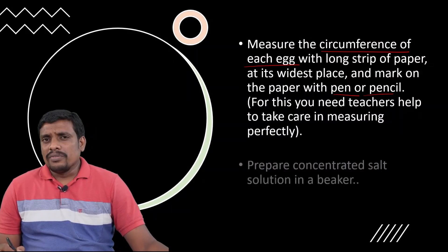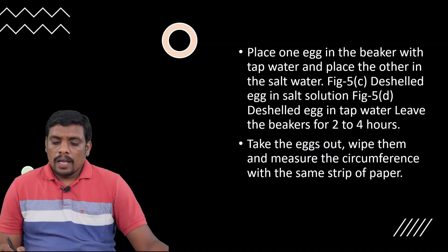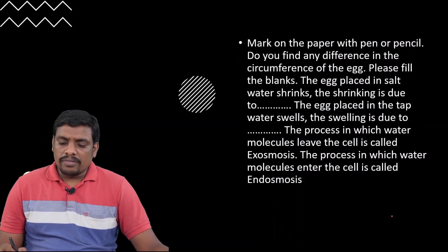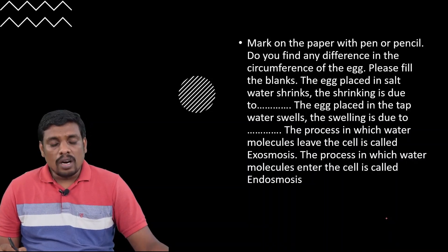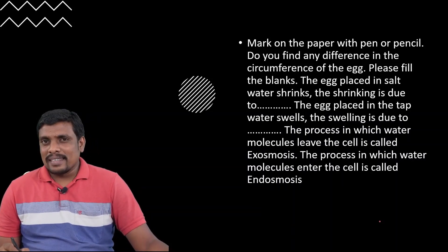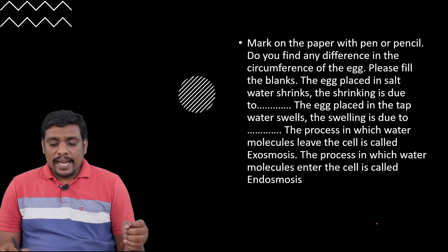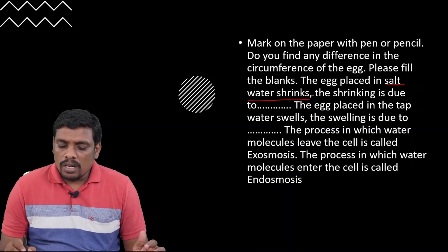After measuring the circumference, if you find any difference, then we have to note that. The egg which is placed in tap water — if you see carefully — it does not shrink; it swells. So the egg placed in tap water swells or bulges. But the egg which is kept in the salt solution shrinks.